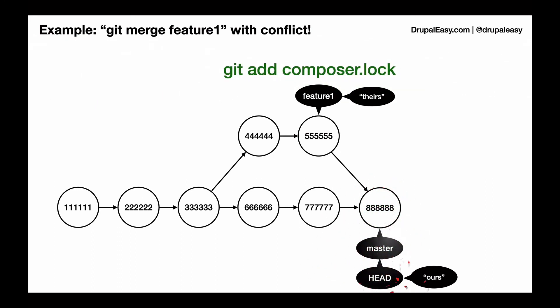After we update that, we're going to add that. So we're going to do a git add to mark that as resolved. And once everything's marked as resolved, we can complete our git commit.